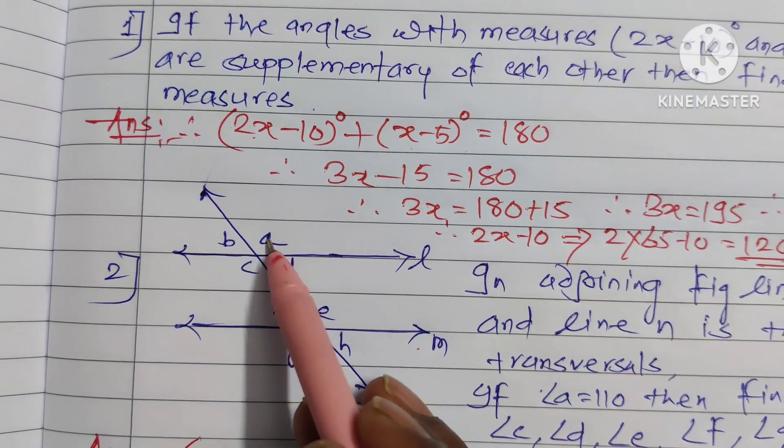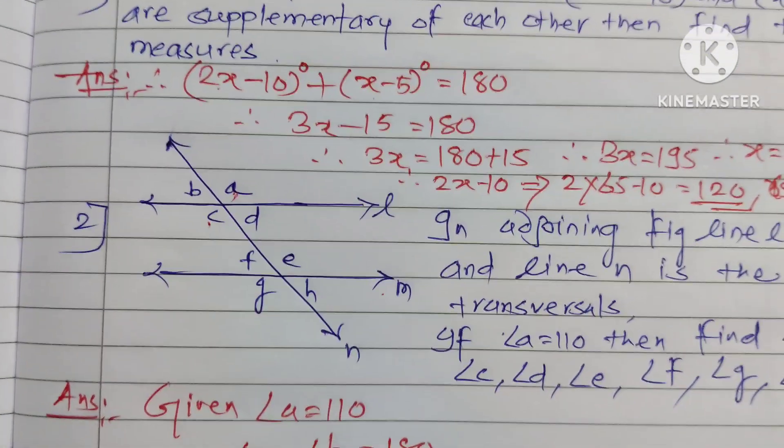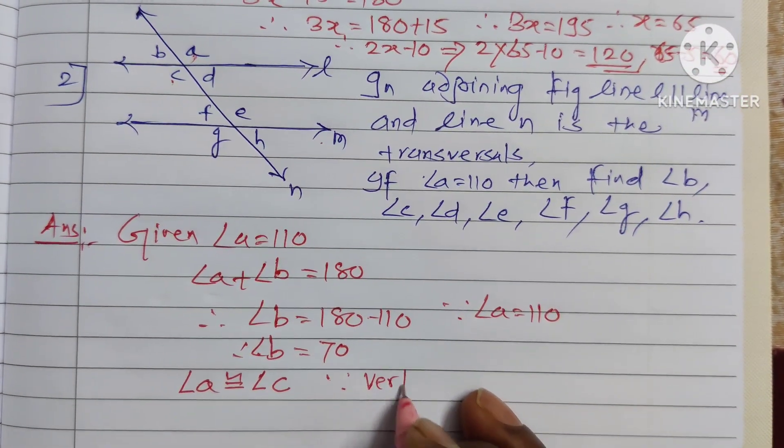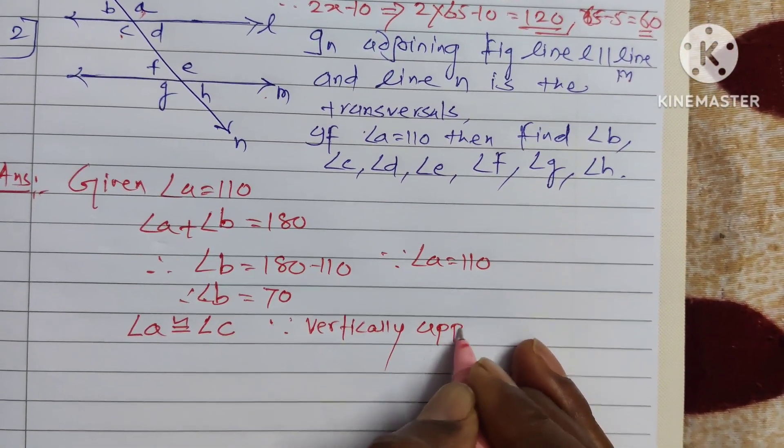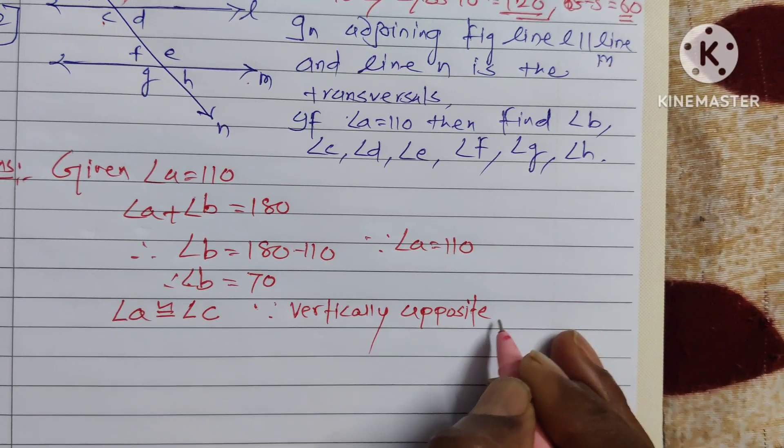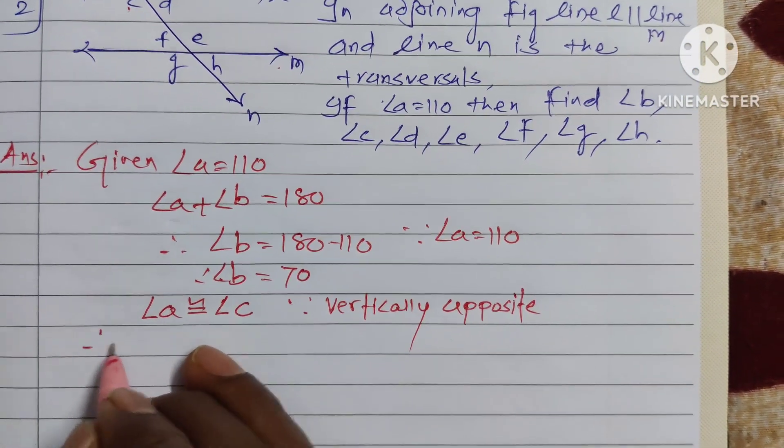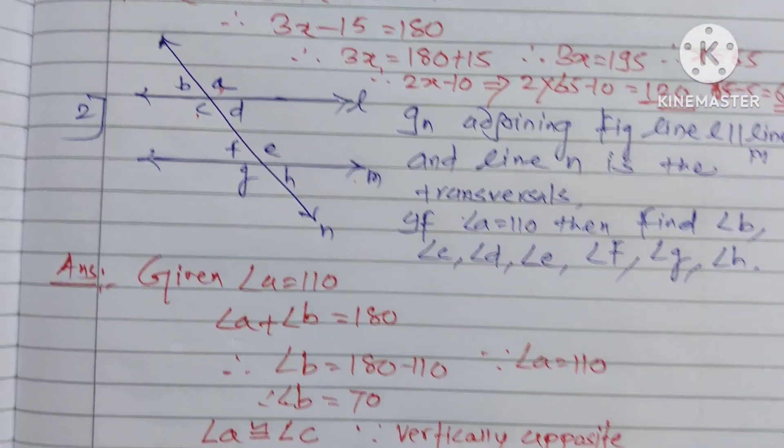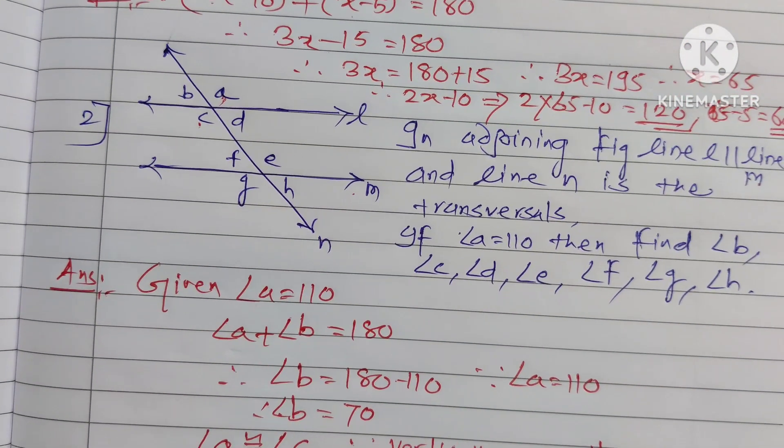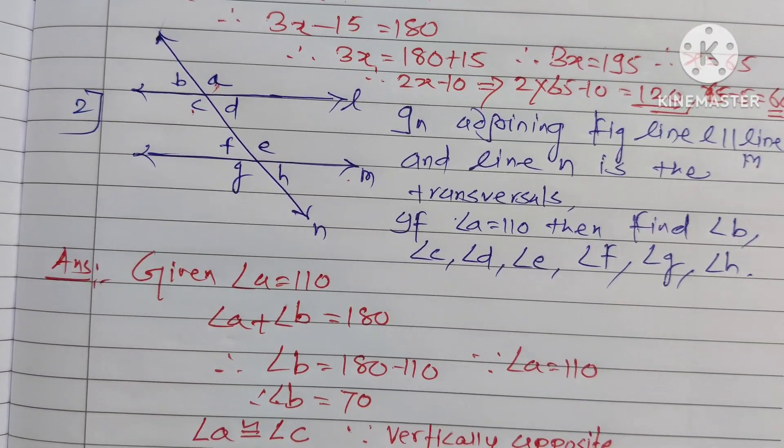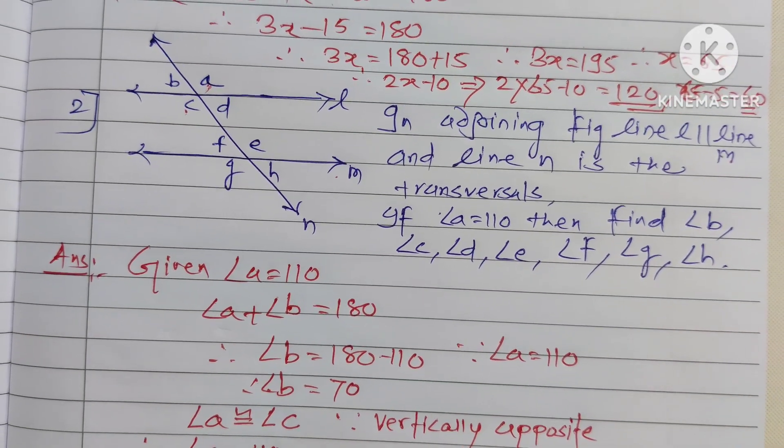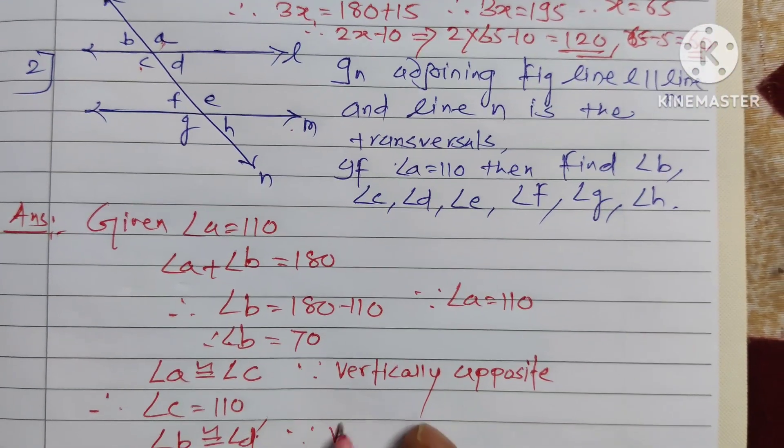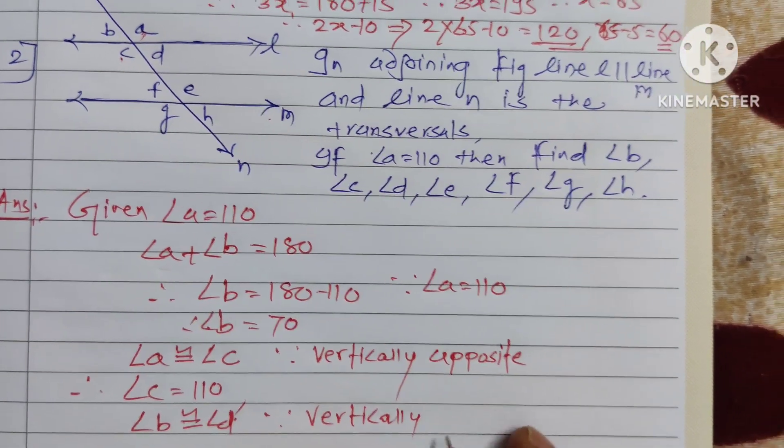Angle a congruent angle c. As shown in the figure, angle a congruent angle c. These are the vertically opposite angles. Because vertically opposite angles are congruent, therefore angle c equal to 110. Now angle d: angle b congruent angle d since vertically opposite angles.